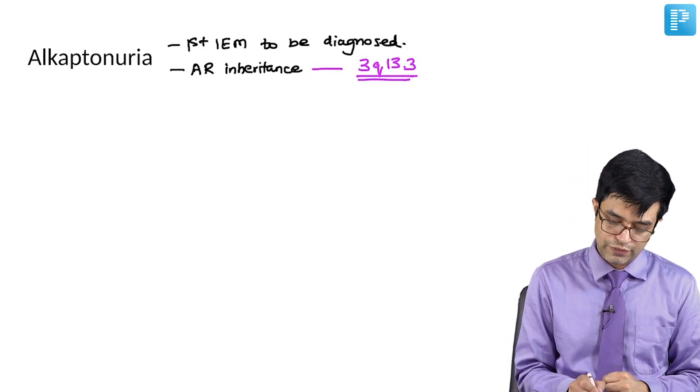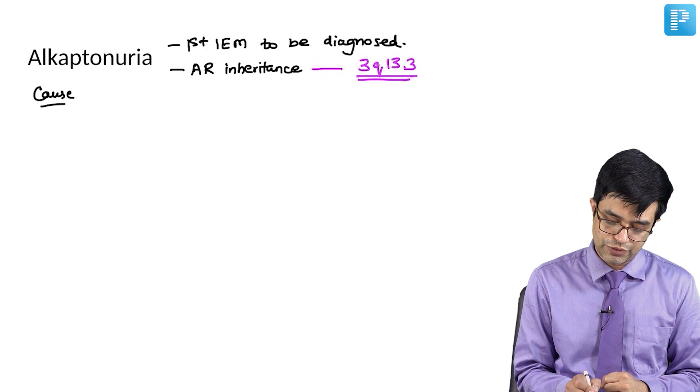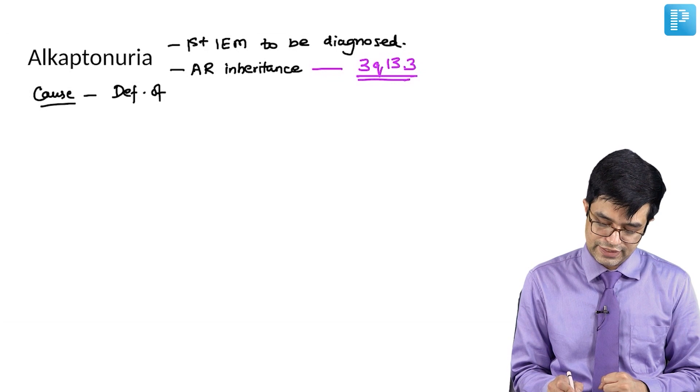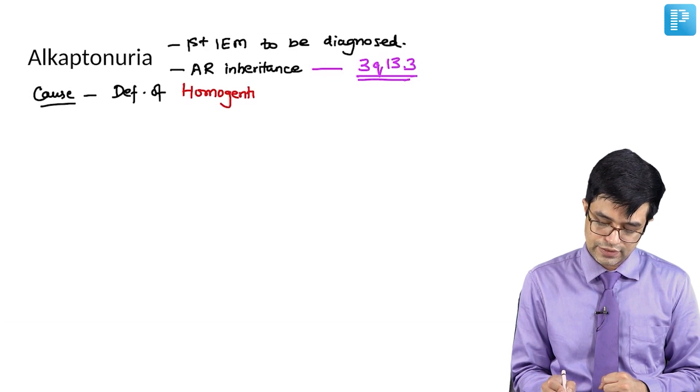What is the cause of alkaptonuria? The cause of alkaptonuria is deficiency of the enzyme homogentisate oxidase.